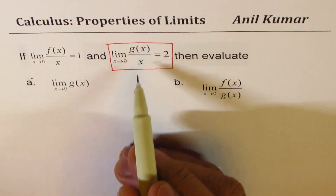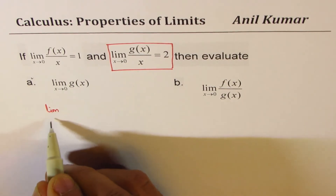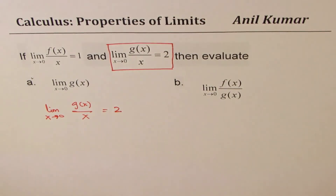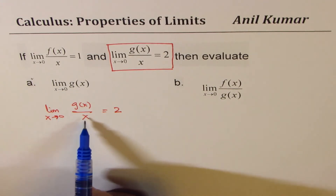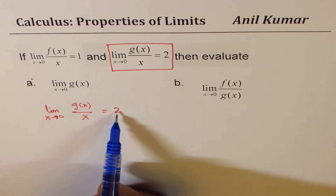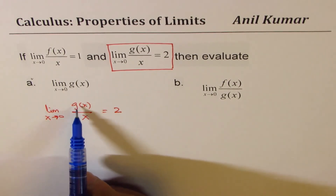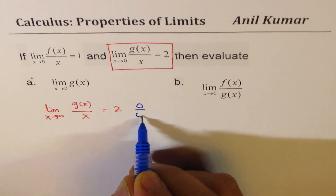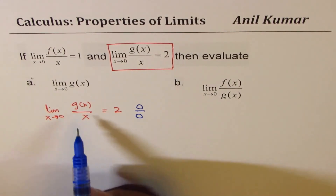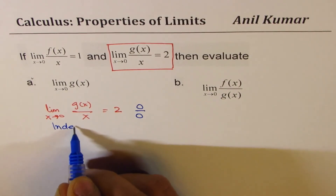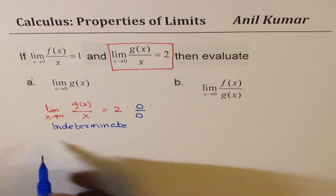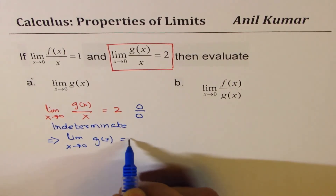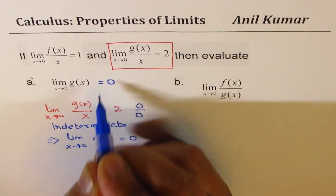Let's consider the limit as x approaches 0 for g(x) over x equals 2. Since this limit exists, it clearly indicates there is a factor of x in the numerator as well. This limit can only exist if we have the 0 over 0 indeterminate form. That means the limit as x approaches 0 for g(x) must equal 0. So that answer is 0.